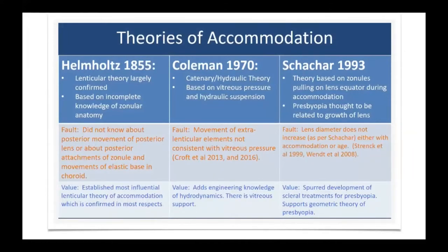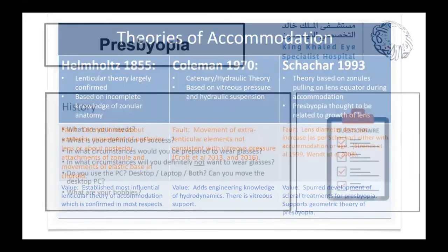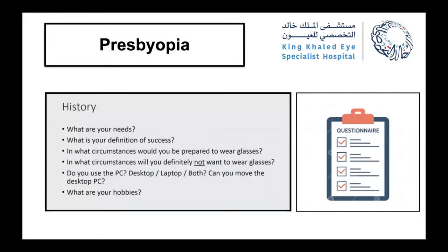Each of the three theories explaining accommodation and presbyopia has an element of truth, but the oldest — the Helmholtz theory — which talks about the lens changing shape in relation to the contraction of the ciliary muscle, is the closest to the truth.